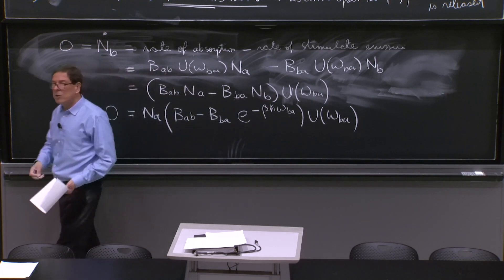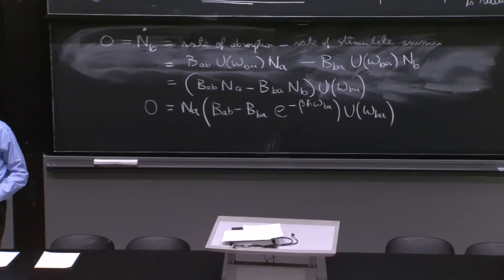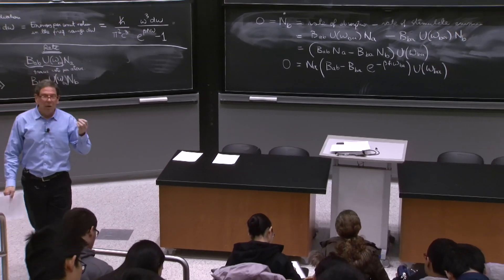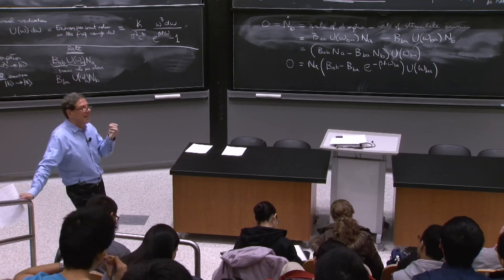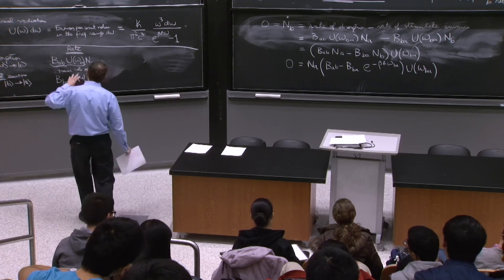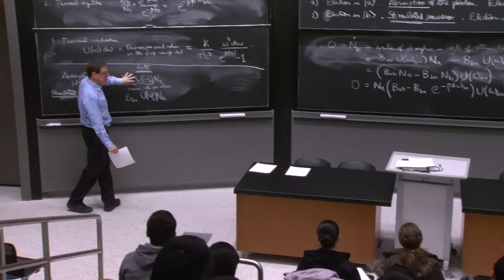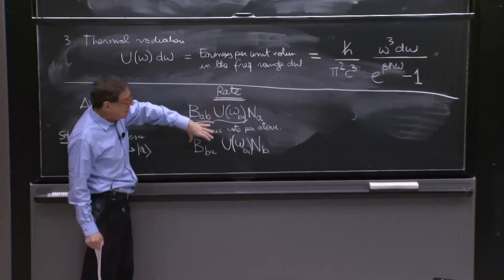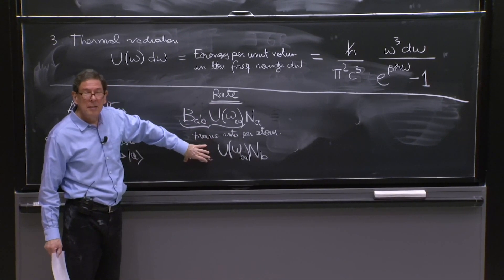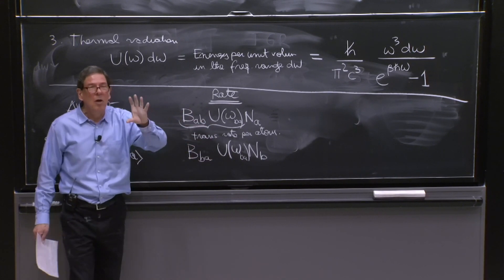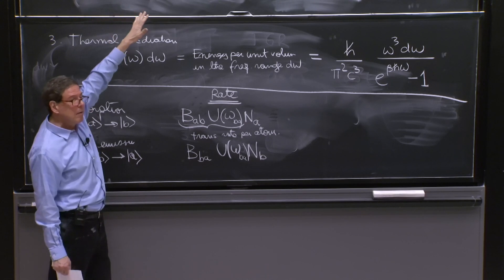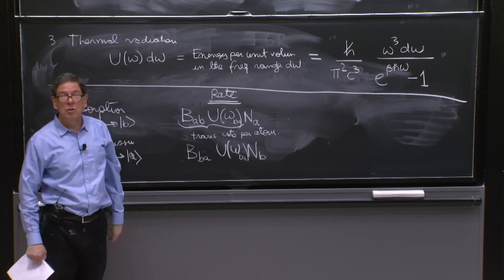But this equation can't be satisfied. What do you have here? You should be able to equilibrate at any temperature. On the other hand, what is our intuition about these quantities BAB and BBA? They should be temperature independent.